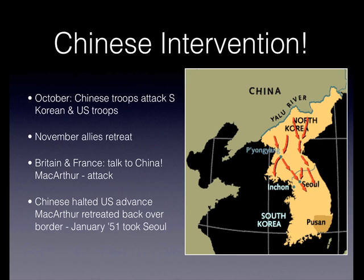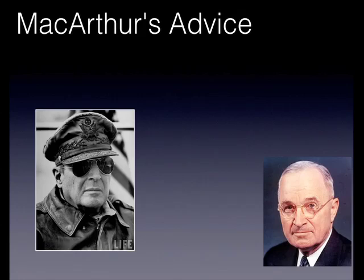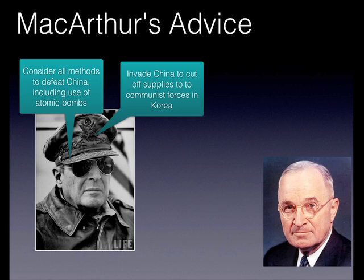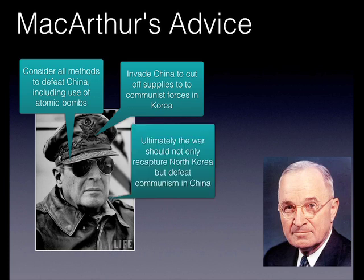In January of 1951, the North Koreans again retook Seoul from the South Korean and American forces. MacArthur now advised Truman to consider all methods to defeat China, including the use of atomic bombs. He hoped that by dropping atomic weapons and creating a radioactive fallout zone, it would be impossible for the Chinese to supply the North Koreans. He also advocated an invasion of China to cut off supplies to communist forces in Korea. Ultimately, he argued the war should not only recapture North Korea but defeat communism in China itself.